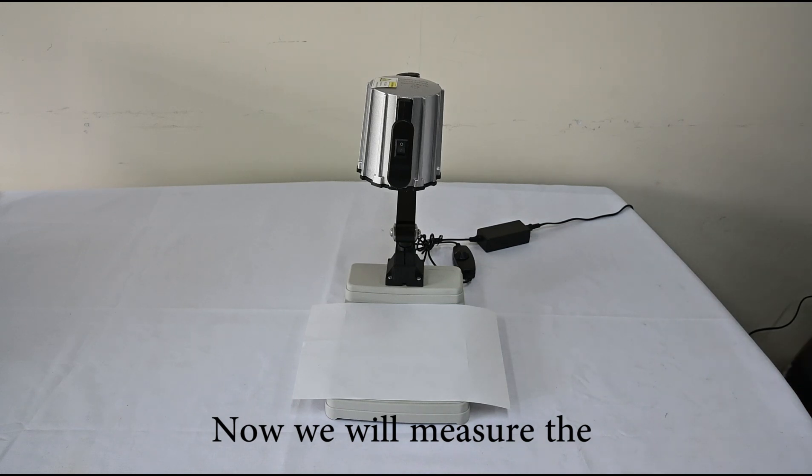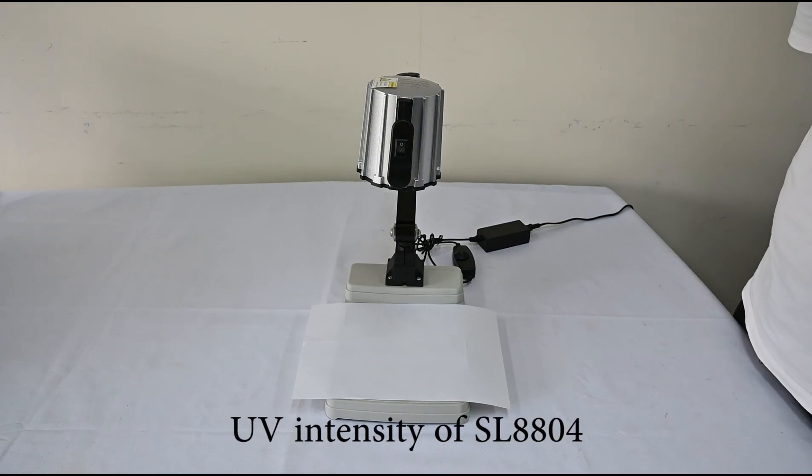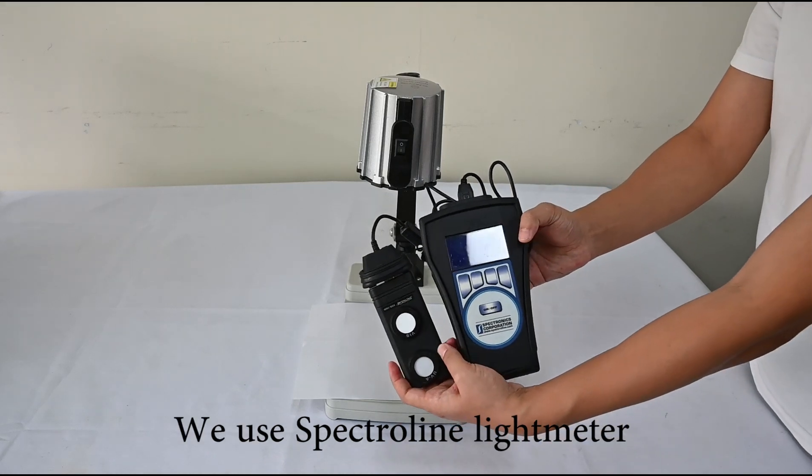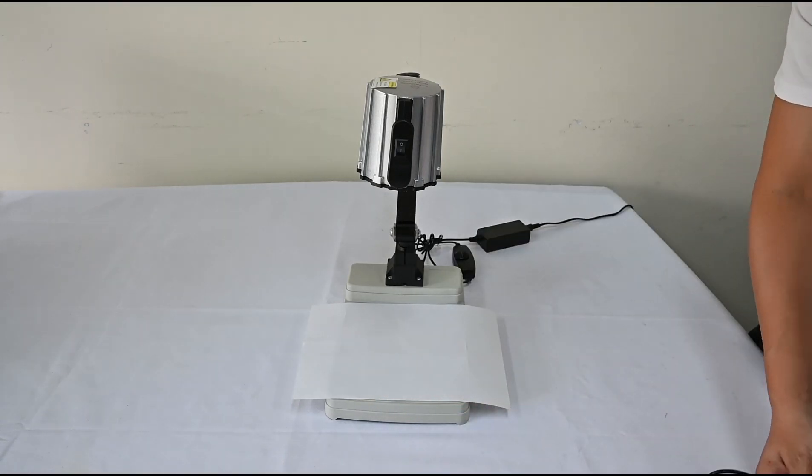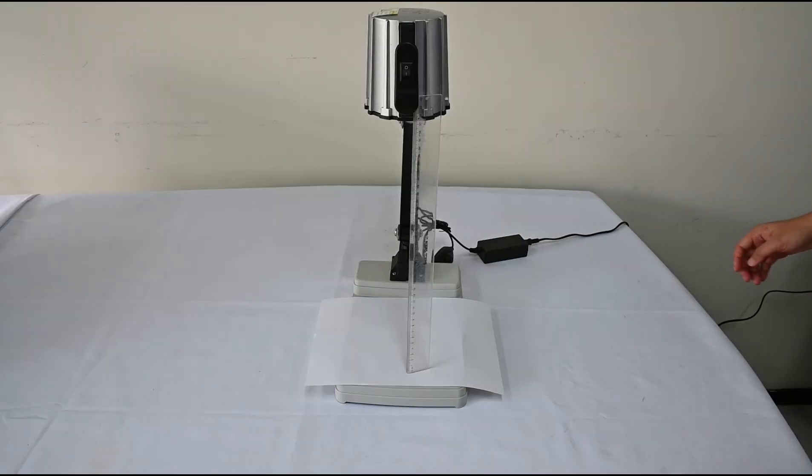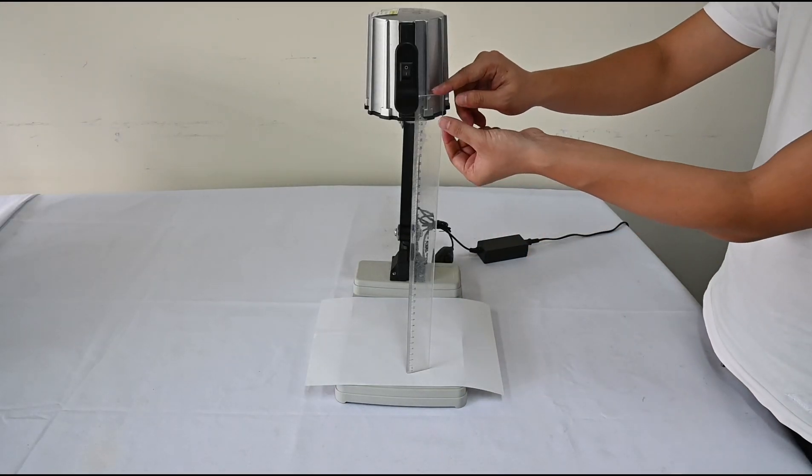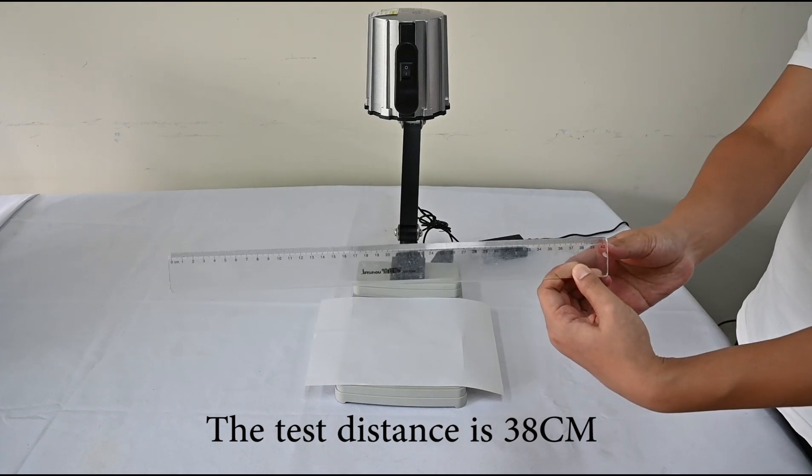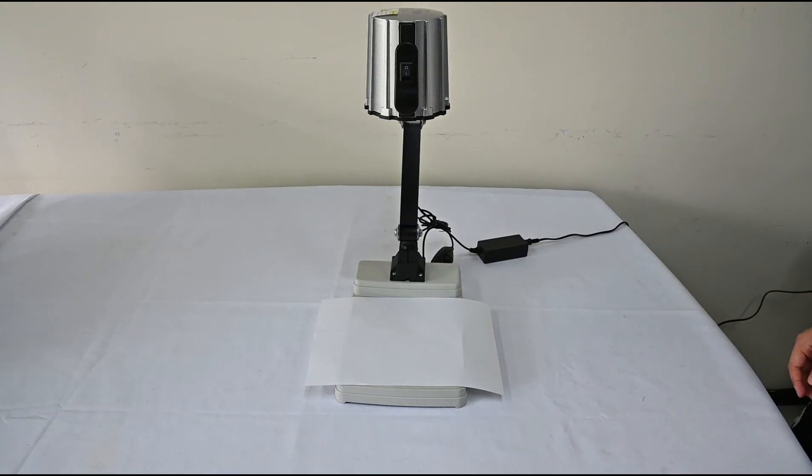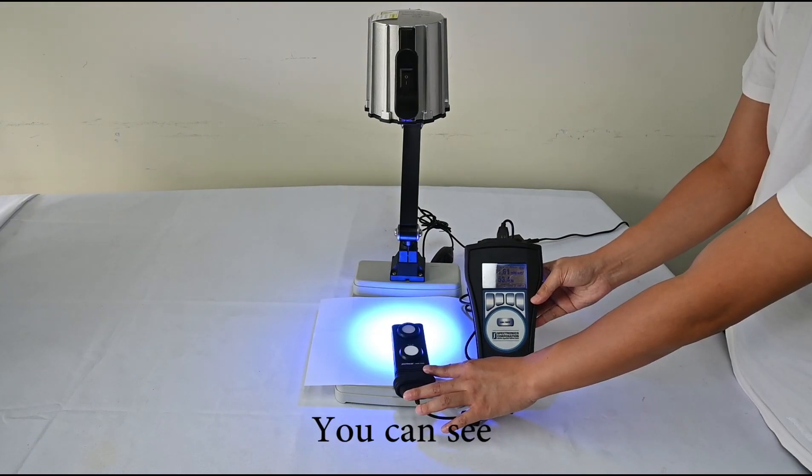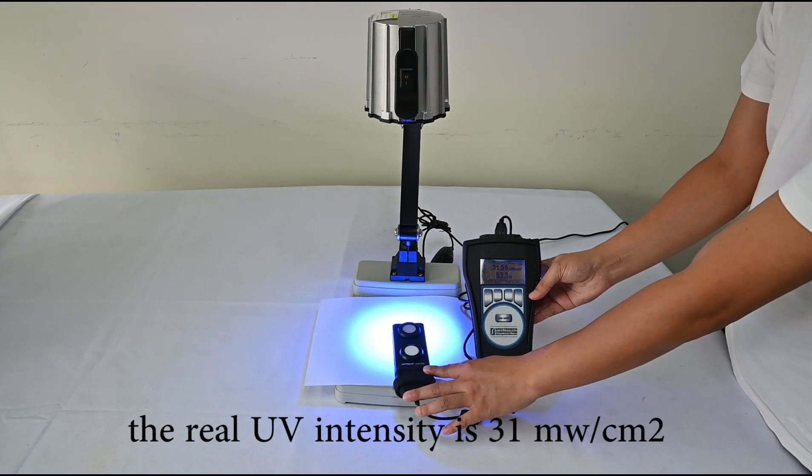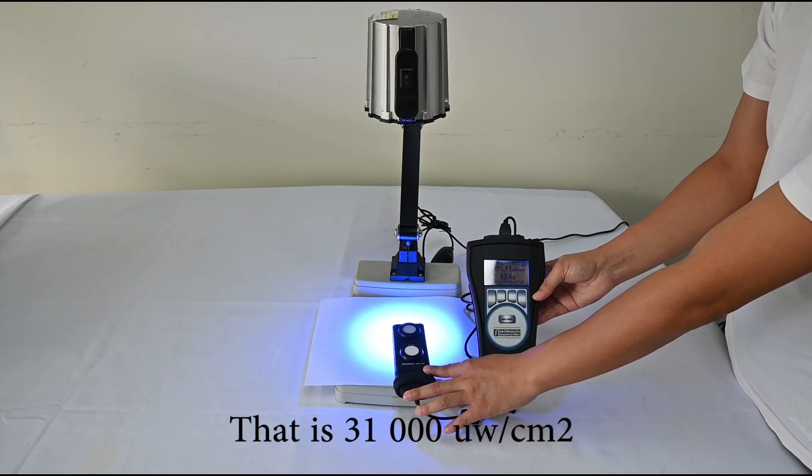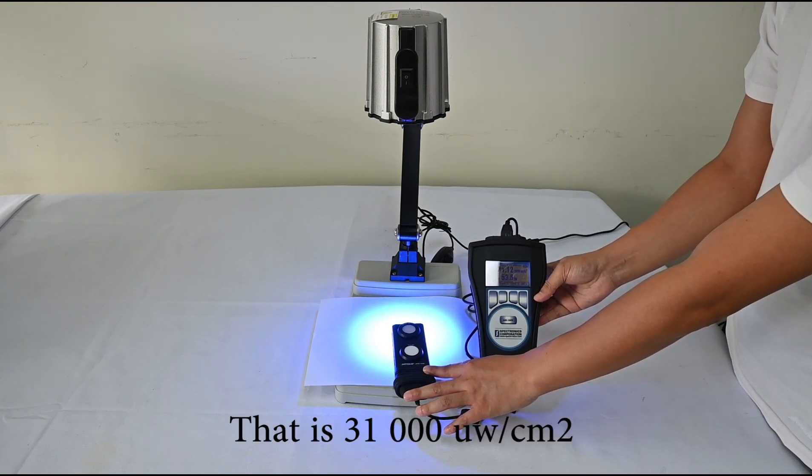And now, we have measured the UV intensity of SLW804. And to ensure the accuracy, we use the spectrolling light meter. And the test distance is 38 cm. Okay, here we go. You can see, the real UV intensity is 31 mW per square cm. That is 31,000 µW per square cm.